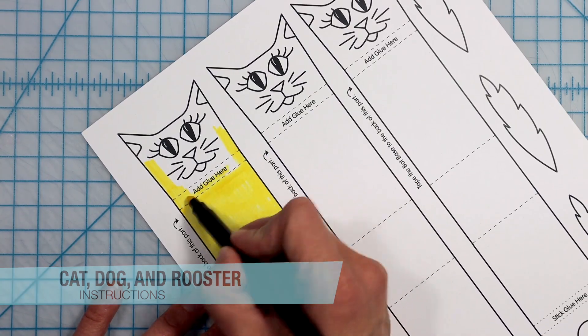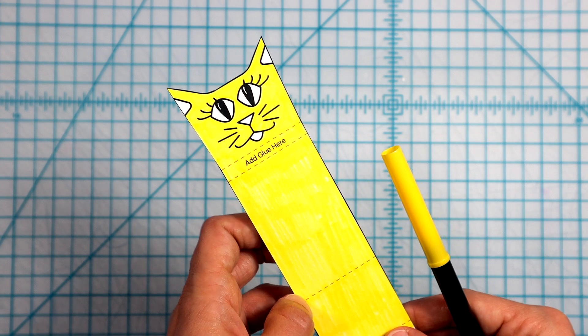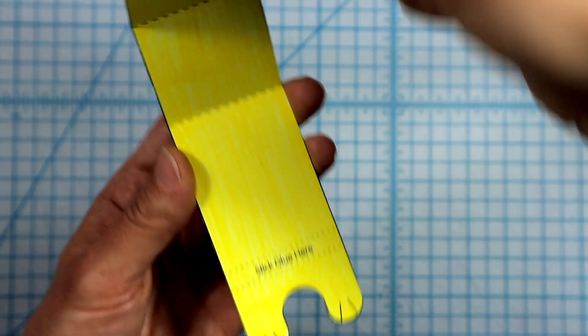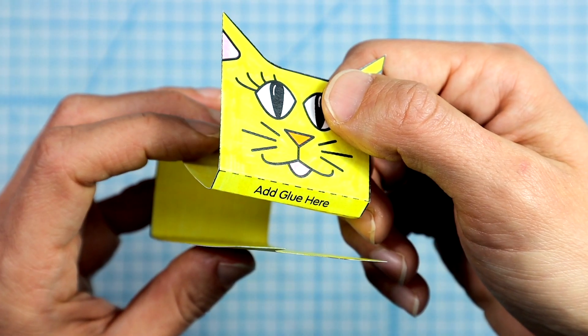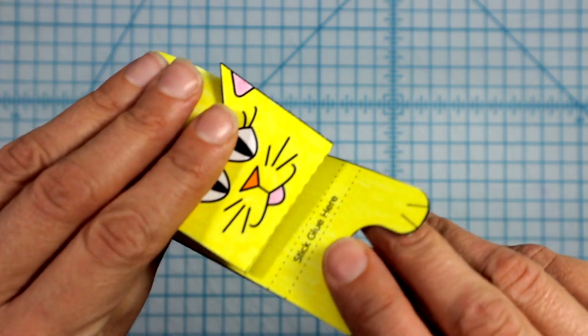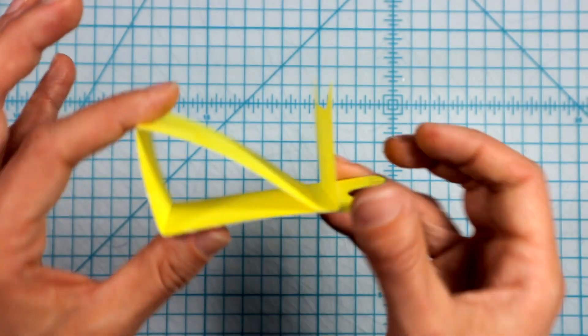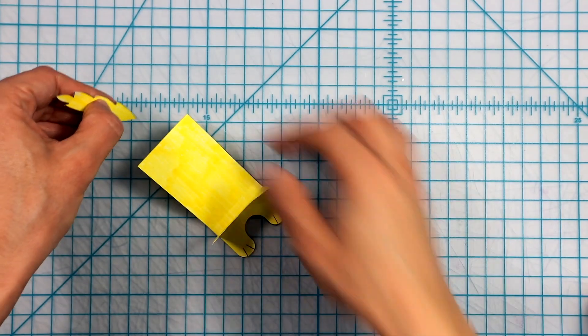Color and cut out the project of your choice. Turn the project over and color the back. Fold along the dashed lines, but not the dotted lines. Then add glue and stick it here so that the animal becomes a triangular shape. Also glue the tail in place.